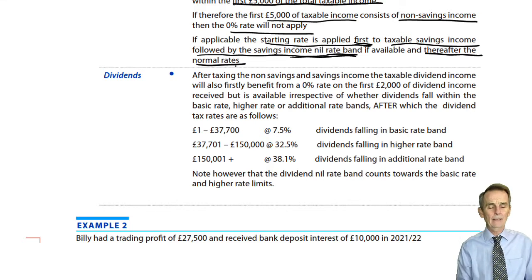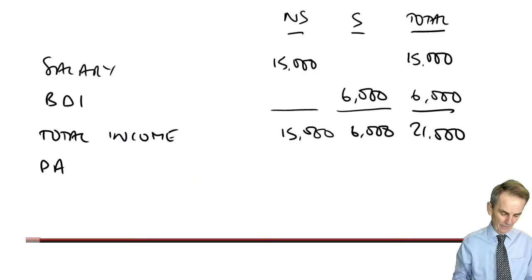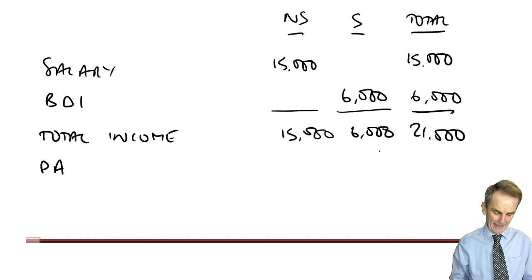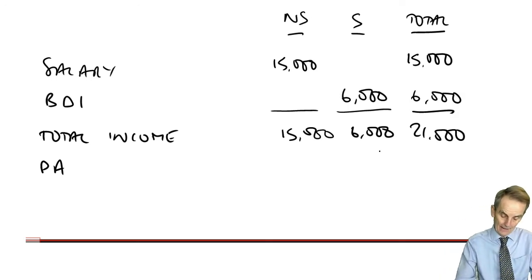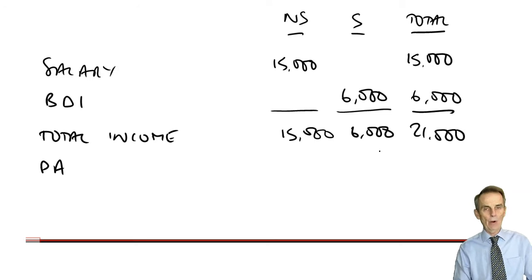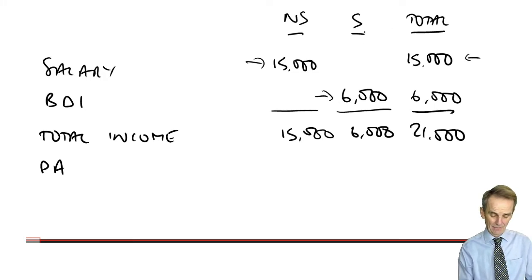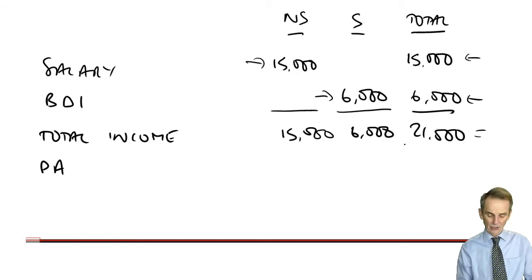Here's an example. I've cut the numbers in relation to both the non-savings and the interest income to see what happens regarding the availability of the 0% starting rate. We have employment income - a salary - of £15,000 non-savings, and bank deposit interest of £6,000 savings income, giving £21,000 of total income. Then we have our personal allowance of course - as always against our non-savings income first, £12,570.